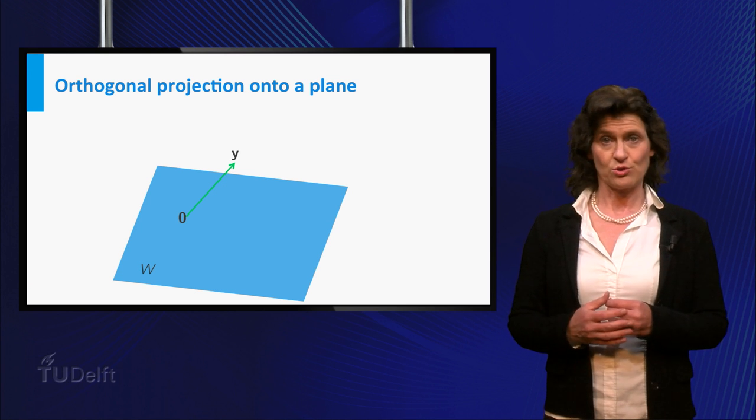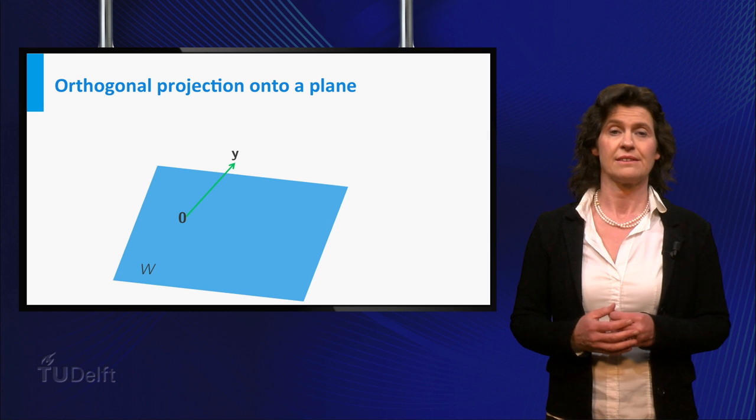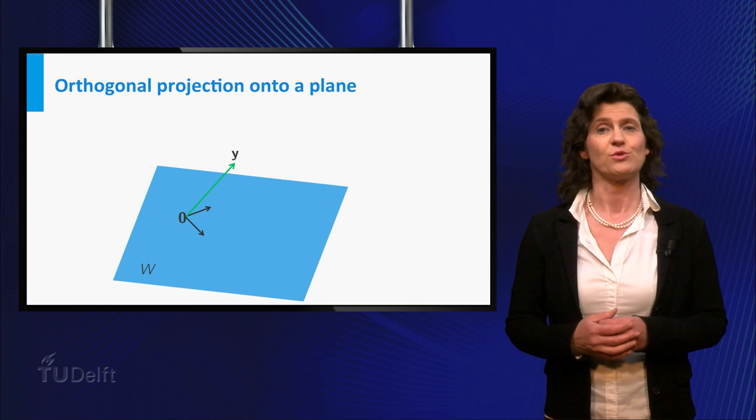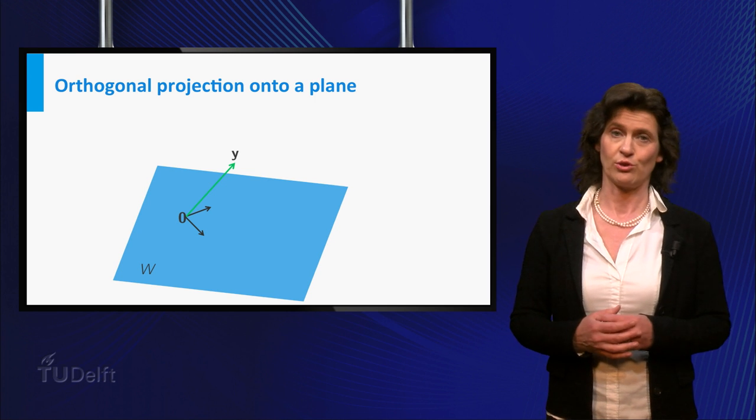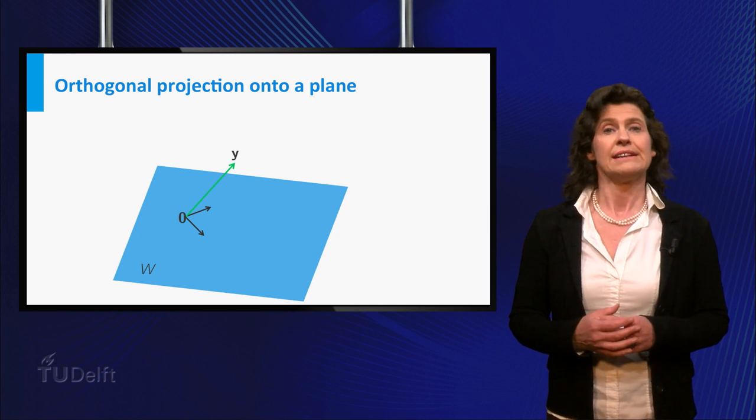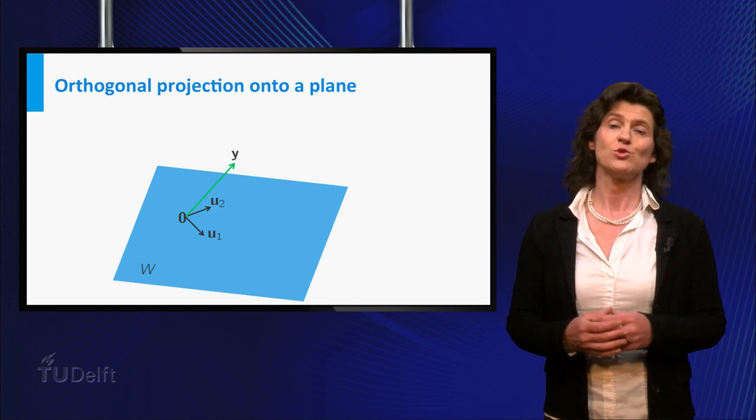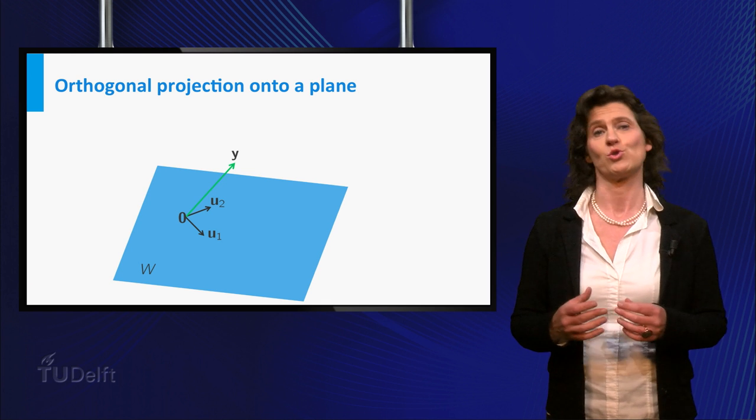Such a pair of vectors is called a basis for the plane. Now choose an orthogonal basis for W. This is a set of two linearly independent orthogonal vectors in W. Let's call them U1 and U2. You will find out why you have to choose an orthogonal basis in a short while.